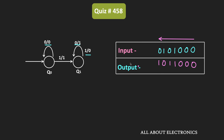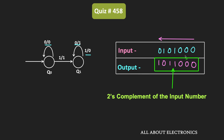In this way, for the given input bitstream, we get this output. If you closely observe, this output is nothing but the 2's complement of the input number. Because in the shortcut method of finding the 2's complement, starting from the LSB, until we encounter the first 1, we copy all the bits as they are. After that, we replace the 0's by 1's and the 1's by 0's. So basically, this output is the 2's complement of the input number, and we can say that the given finite state machine performs the 2's complement of the input number.